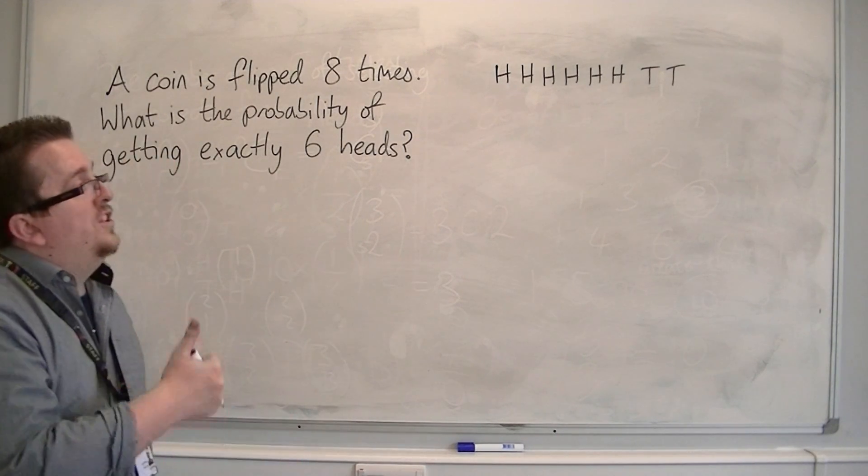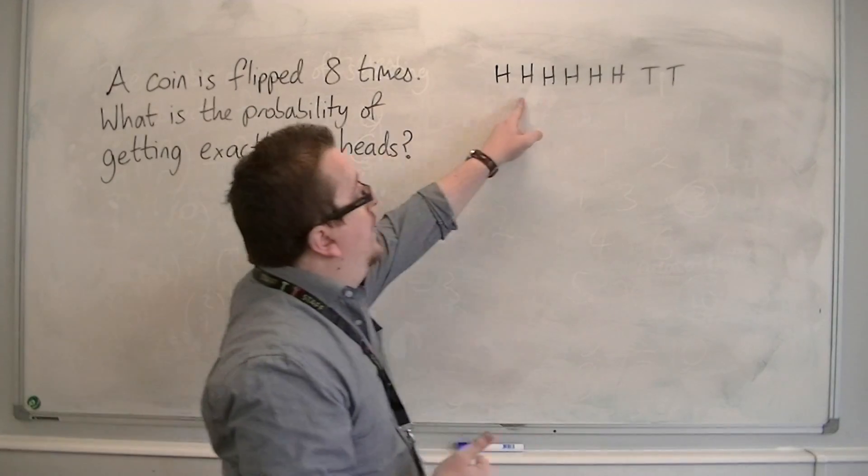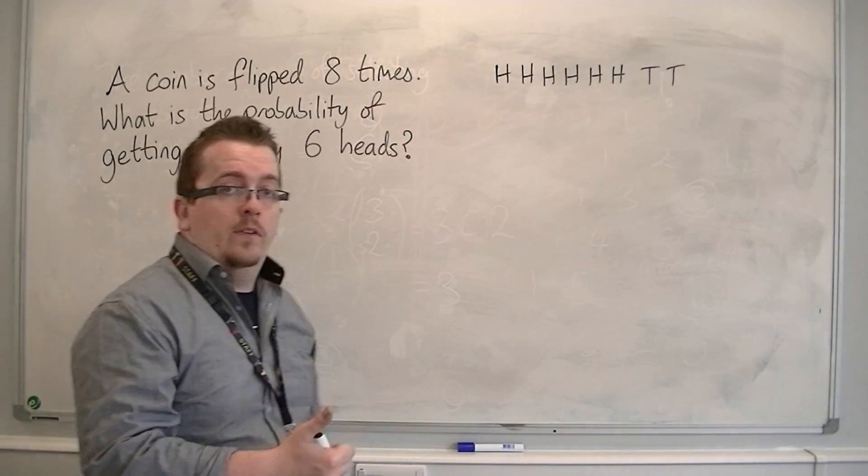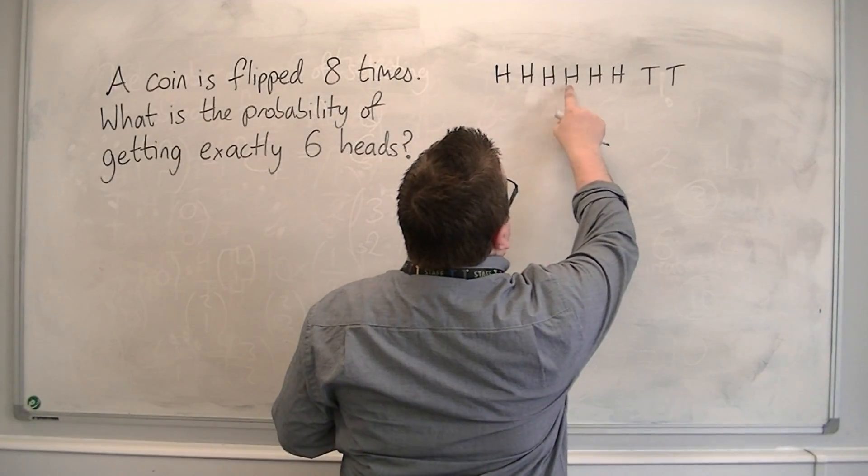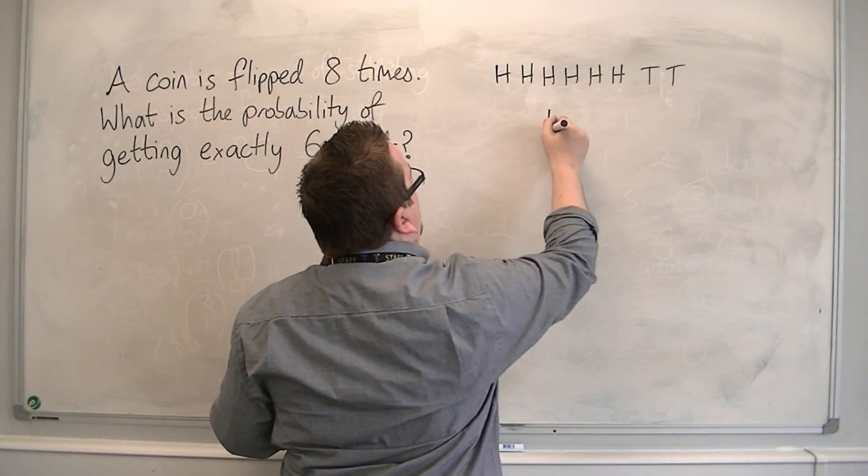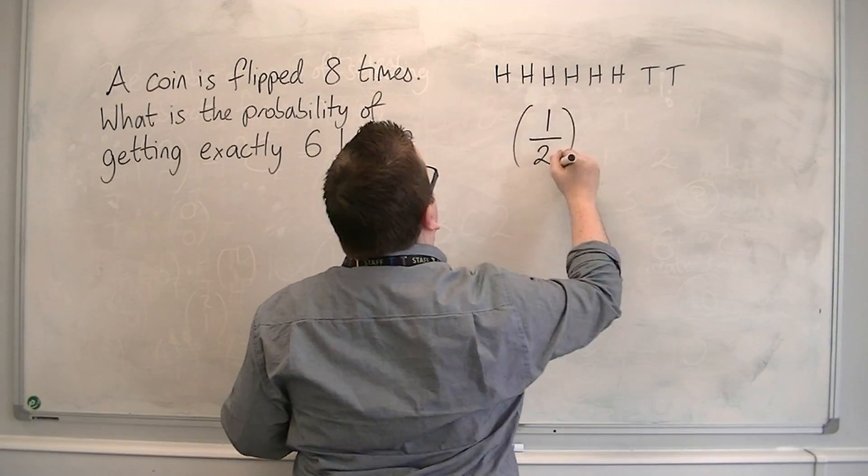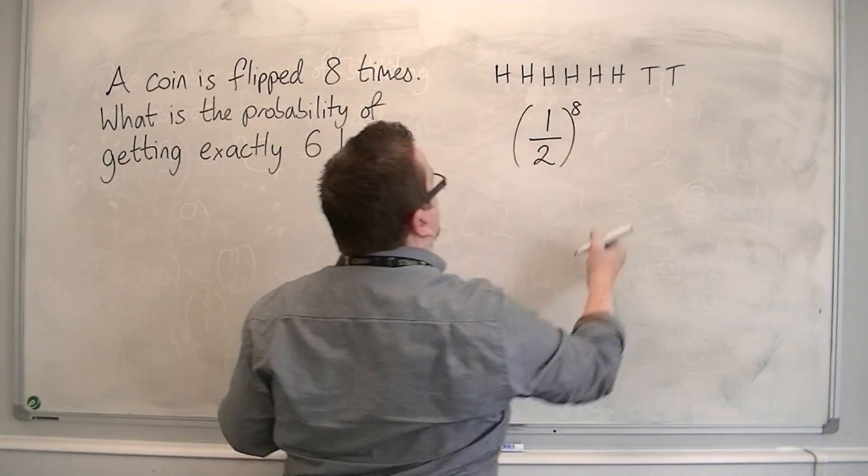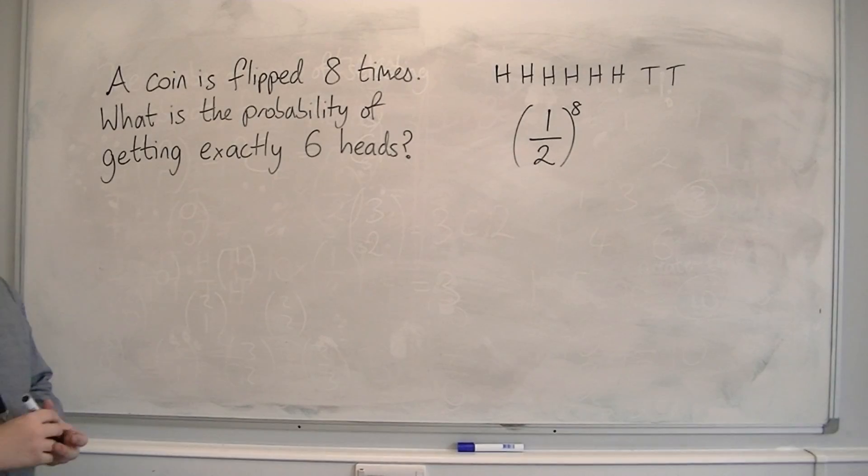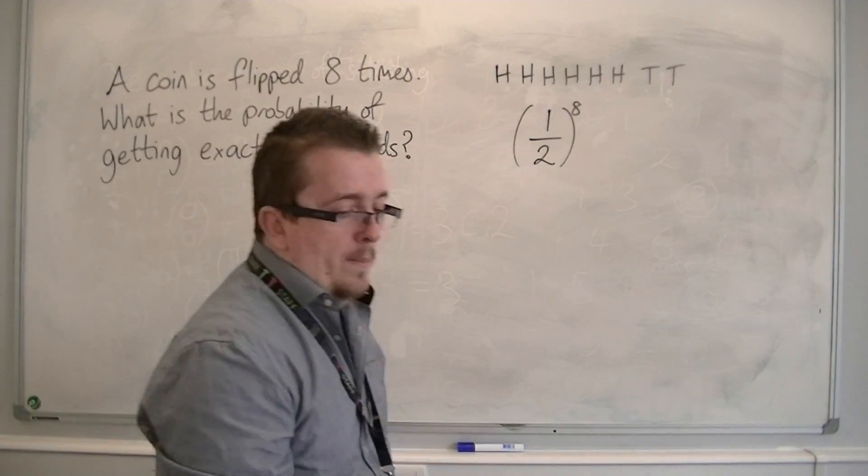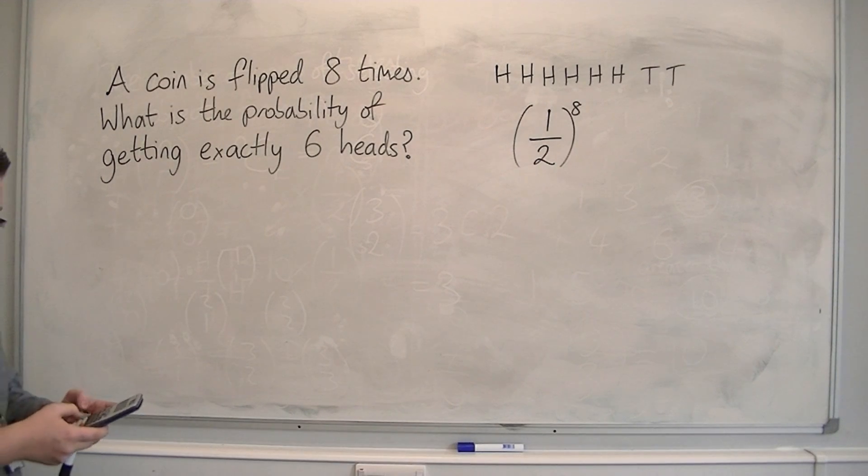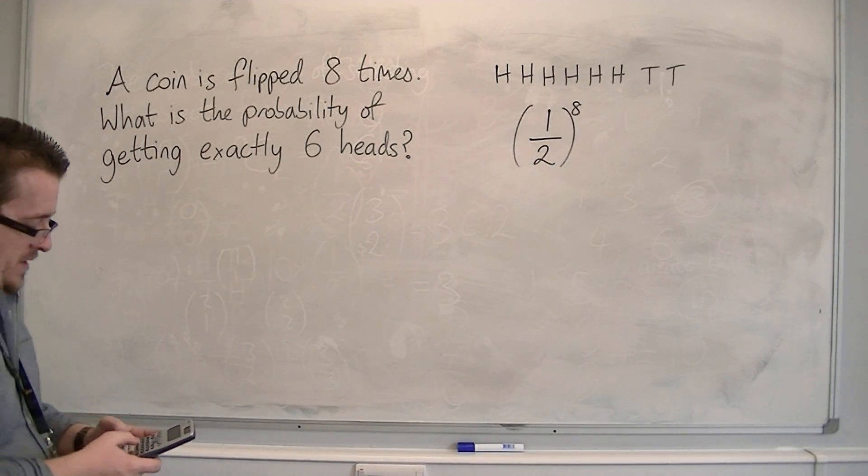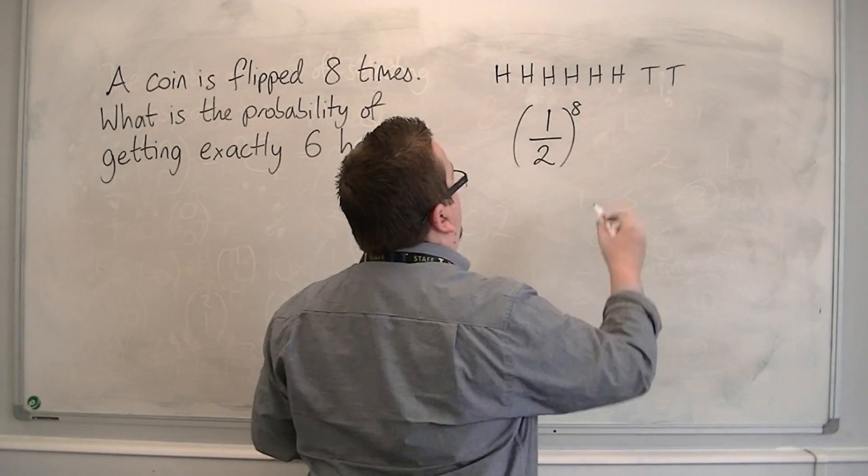Let's first think about what is the probability of having this happen. So each of these has a probability of 1 half, and so that would be 1 half to the power of 8. So that would be the probability of just one of these happening. So 1 half to the power of 8 is 1 over 256.